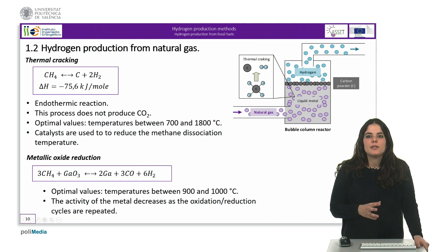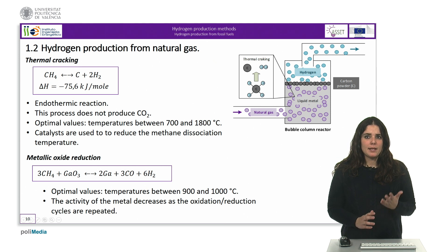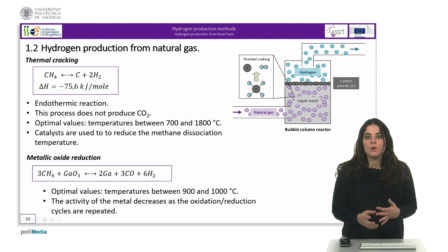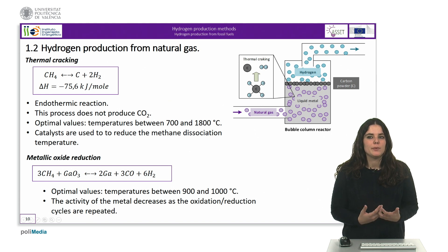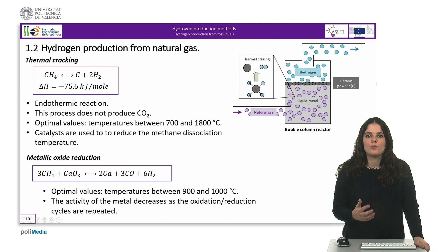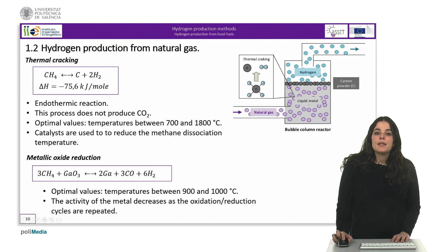In order to reduce the methane dissociation temperature, catalysts are normally used, which can be based on metals or carbon. The use of carbon-based catalysts offers certain advantages over metal ones: their availability, durability and low cost. When catalysts are not used, the decomposition of methane produces amorphous carbon, commonly called black carbon. The economic feasibility of this process depends to a large extent on the selling price of the carbon by-product produced, which in turn depends on the catalyst used and the operating conditions in the reactor.